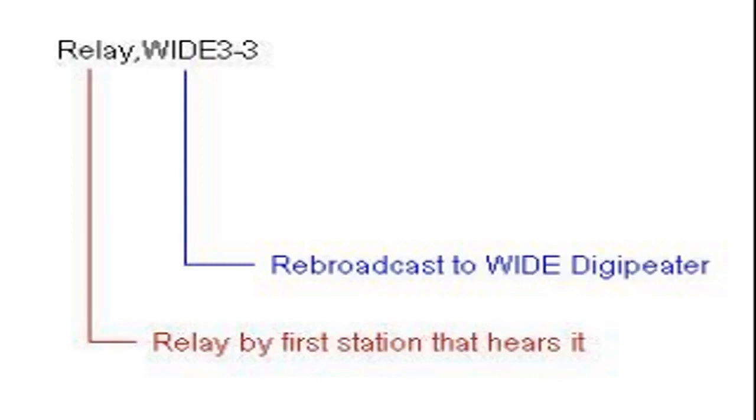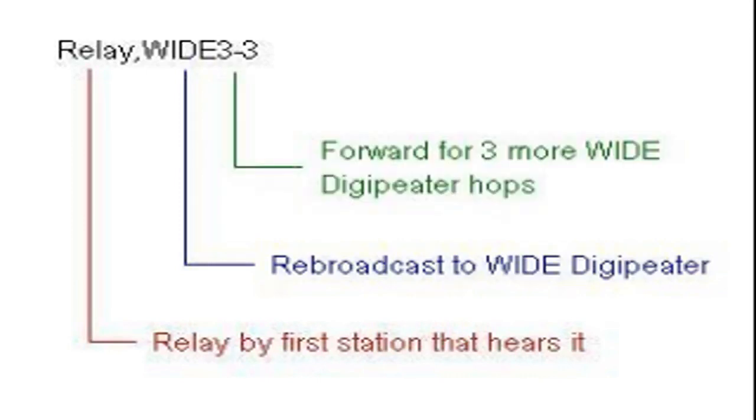Once a relay station forwards the packet to a wide digipeater, it should then forward it for up to three additional hops. Let me show you how the message is modified as it's rebroadcasted through the system. Here is the message as the user transmitted it. After being digipeated by a relay station, notice the asterisk that's been added — this signifies where the message is in the relay process. After being resent by the first wide digipeater, the final three has been changed to a two, meaning it's been through one hop and now has two left to go. As the message is received by another wide digipeater, it moves further from its starting point, and the final digit then becomes a one — meaning one hop left to go.